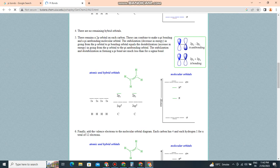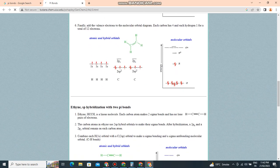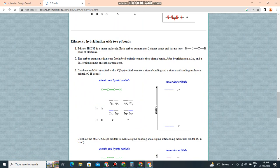You can see sp hybridization with two pi bonds in HCCH. It is a linear molecule. Each carbon atom makes two sigma bonds and has no lone pairs.